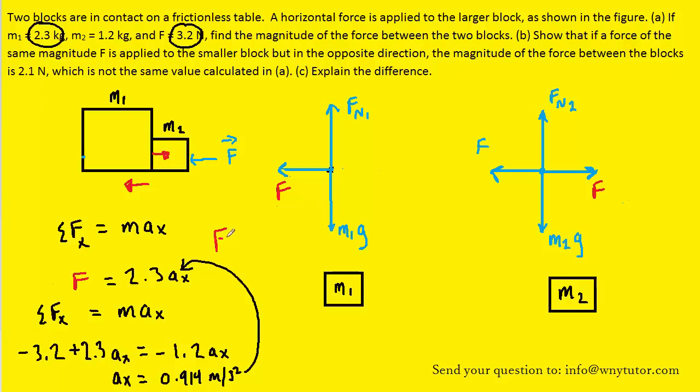And when we do that, we find that that unknown force is indeed equal to the 2.1 Newtons that Part B predicted and sort of told us that it would turn out to be.